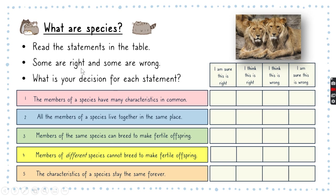Some of them are right and some of them are wrong. I want you to think about your decision for each of these statements. Number one: the members of a species have many characteristics in common. What do you think? Are you sure this is right, do you think this is right, do you think this is wrong, or are you very sure that this is wrong?